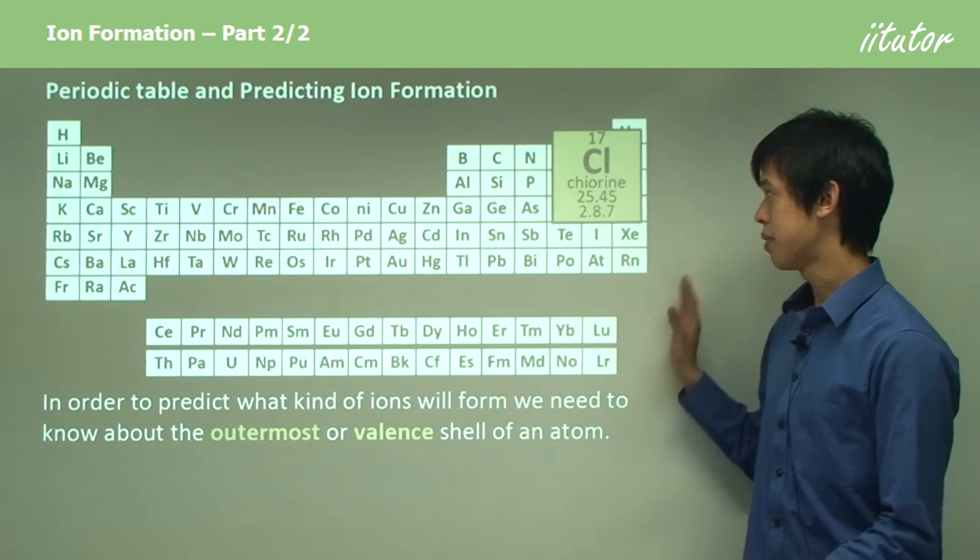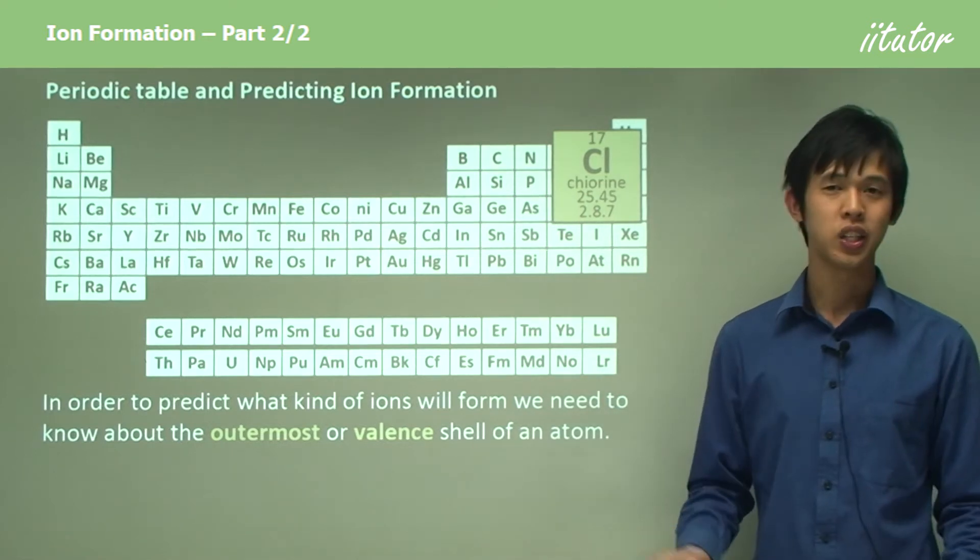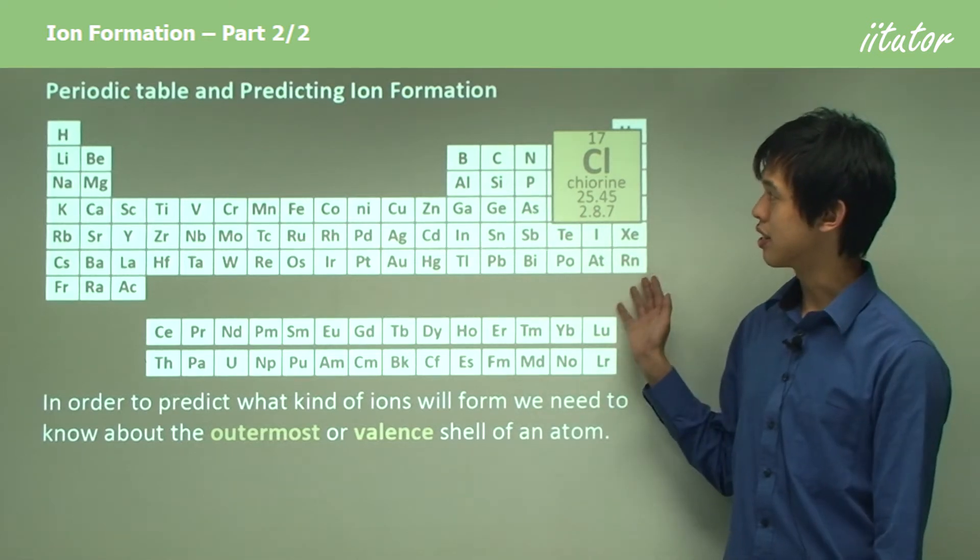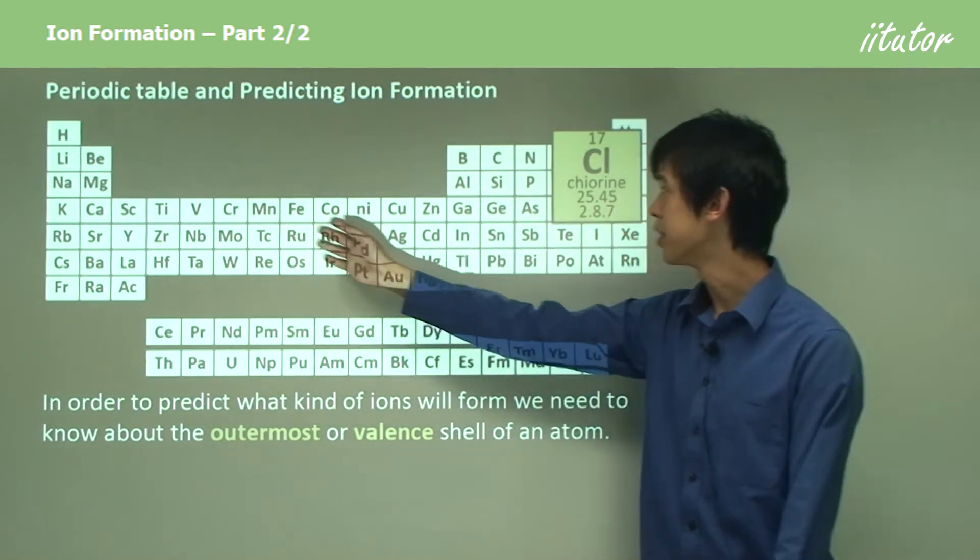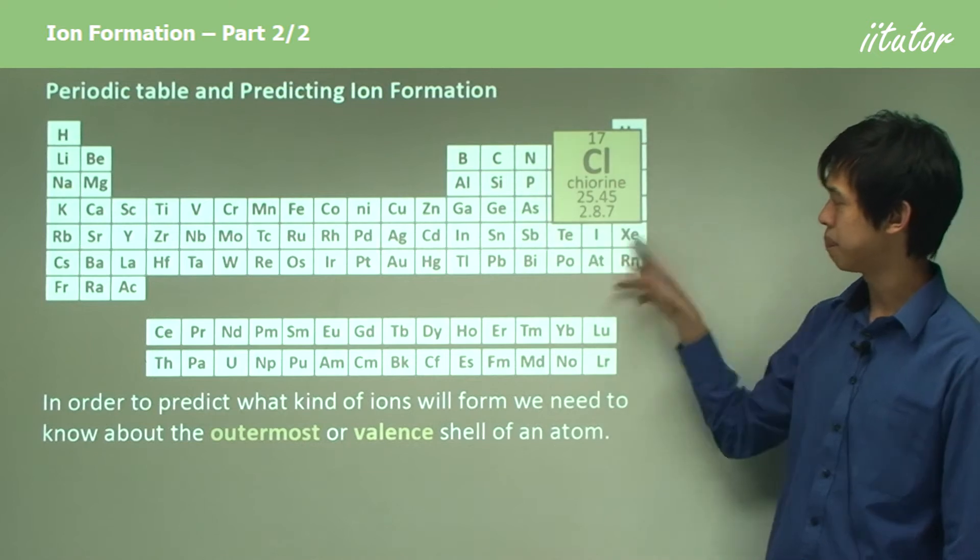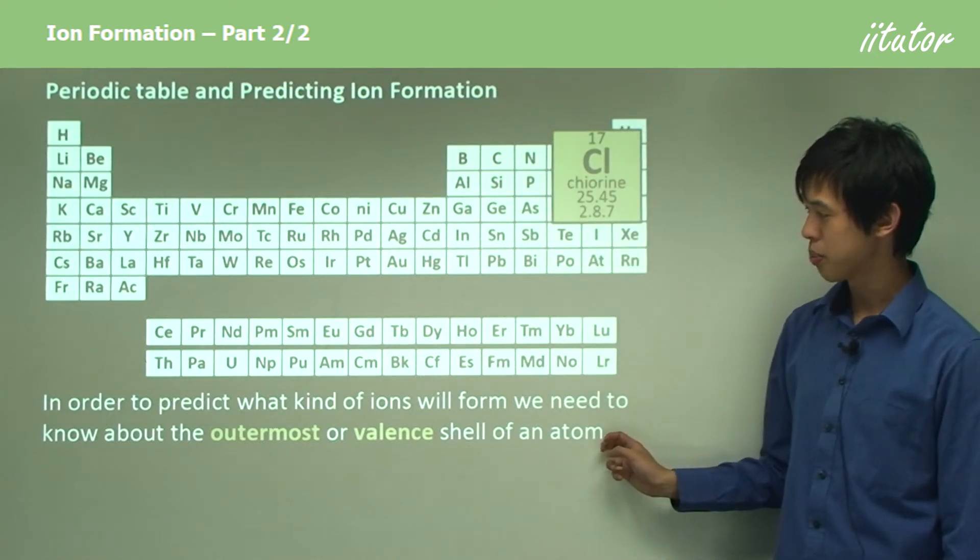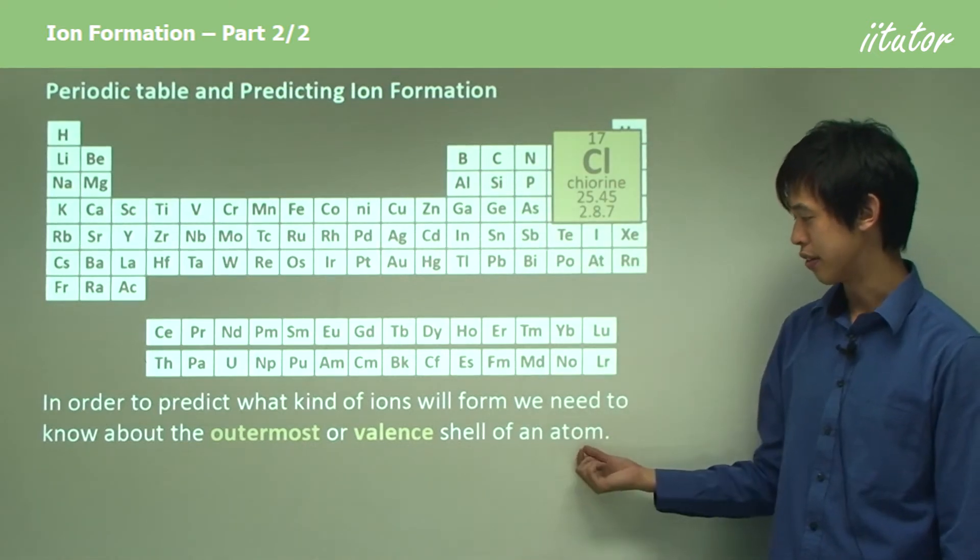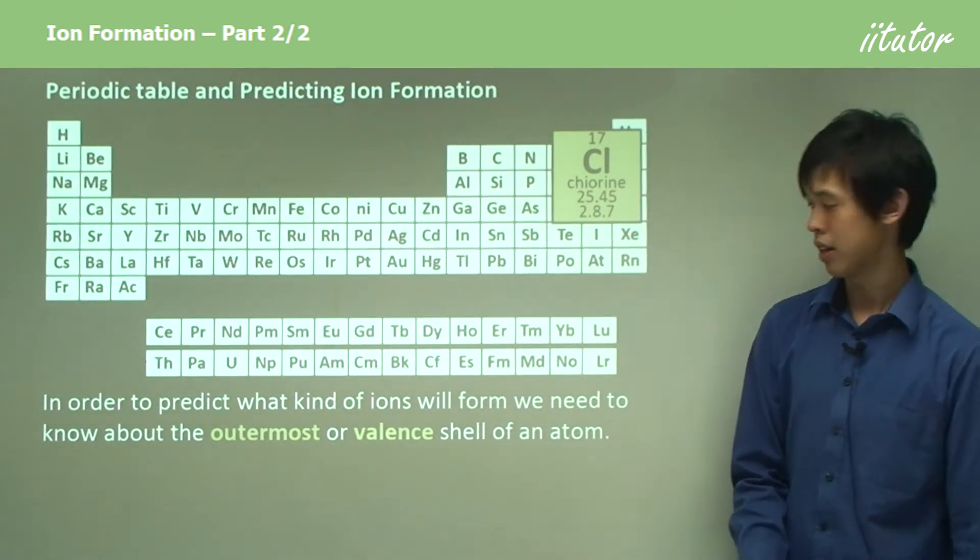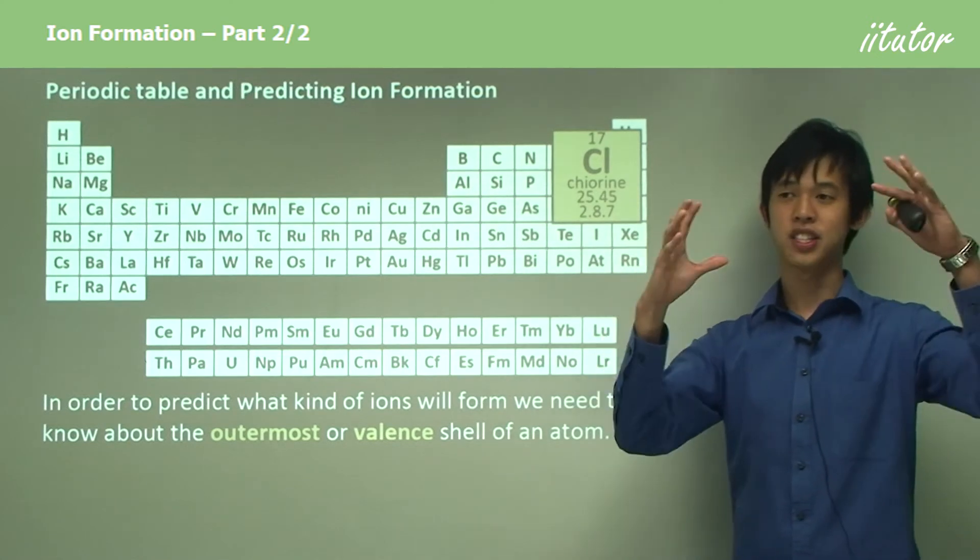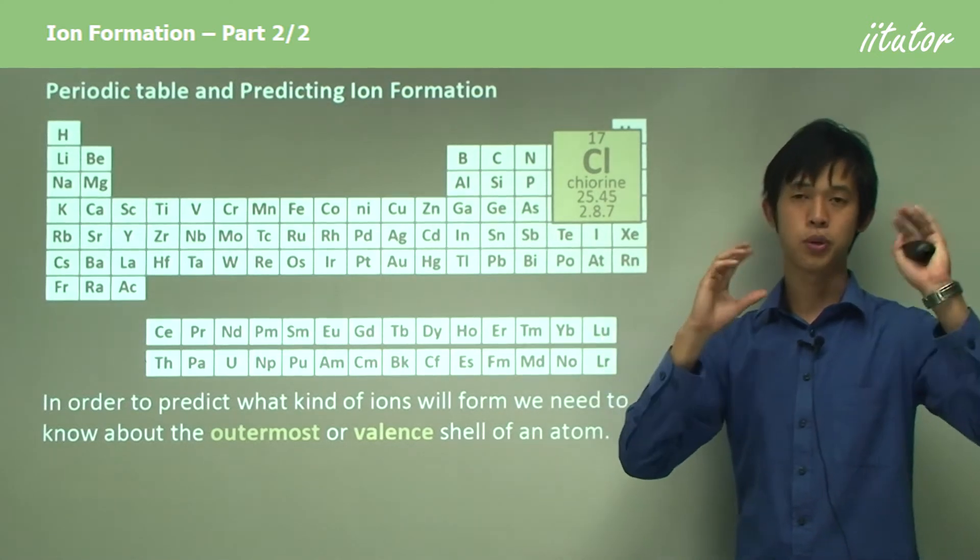How do we use the periodic table to predict ion formation? Here I have my periodic table and I've zoomed in on chlorine. In order to predict what kind of ions will form, we need to know about the outermost or valence shell of an atom.